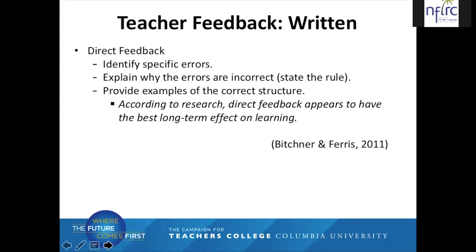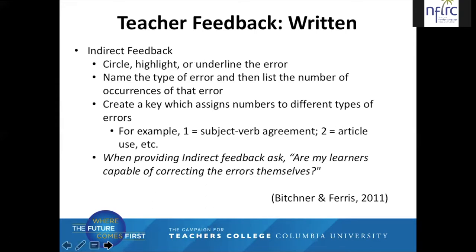In their book, Written Corrective Feedback and Second Language Acquisition in Writing, Bichner and Ferris note two primary types of written feedback — direct and indirect. When giving direct feedback, teachers identify specific errors, explain why the errors are incorrect — stating the rule — and may also provide examples of the correct structure. According to research, direct feedback appears to have the best long-term effect on learning, but there is research to support indirect feedback too, and it's often more practical to give because time is frequently limited.